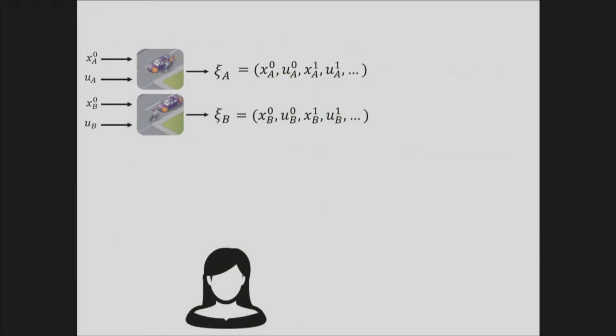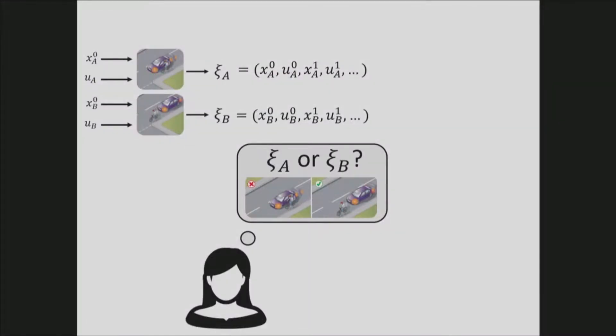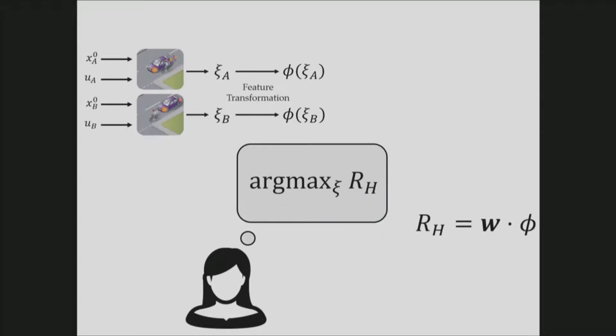To mathematically analyze this, we model the environment as a dynamical system. So given the initial states x0a and x0b and the control inputs ua and ub, we can simply generate trajectories ψa and ψb. And we then ask the user which trajectory she prefers. As in many other reward learning works, we are assuming there are some well-engineered features and the hidden reward function is a linear combination of those features. So what the human is trying to do is basically trying to maximize this hidden reward function.